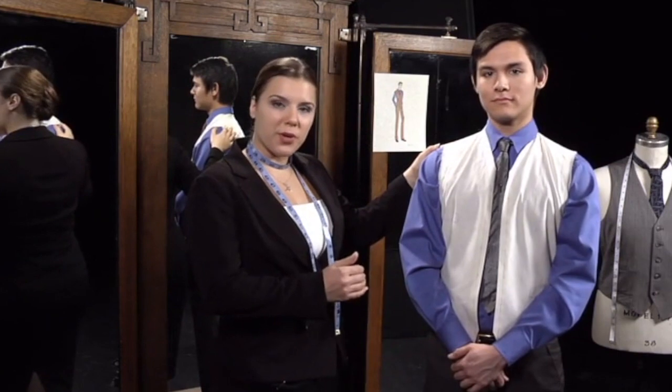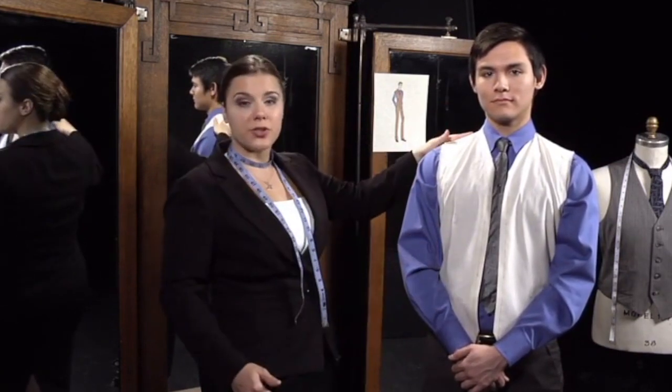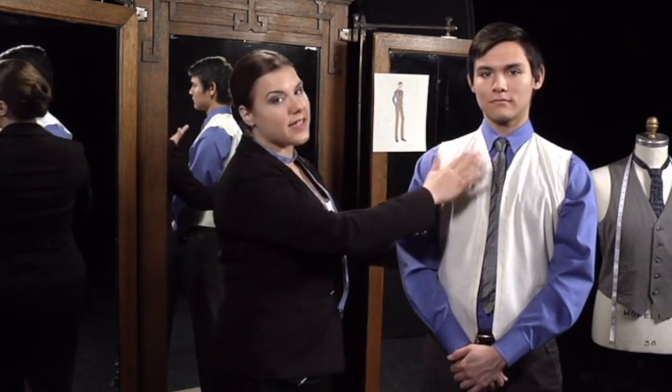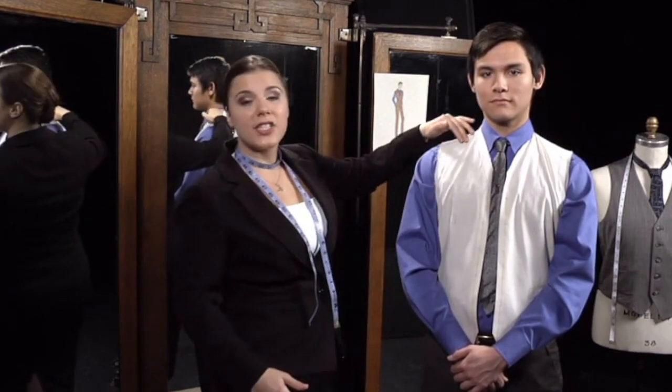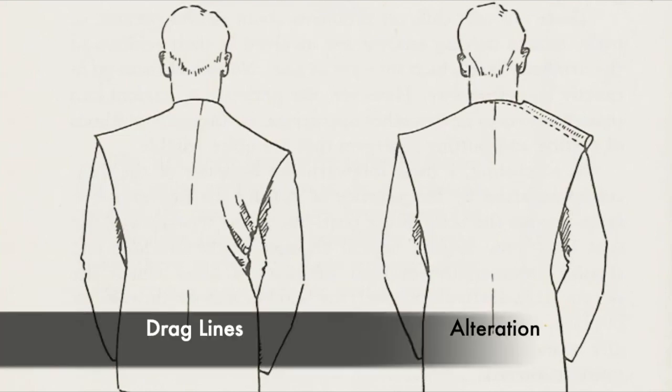There are several areas that we are going to assess as alteration points: the side seam, the shoulder seam, the back darts, and the style lines. These tension lines that you see here are called drag lines and you can usually visually follow them to find out where the alterations need to take place.